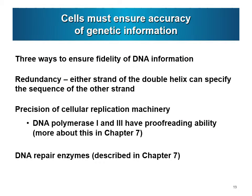There are three ways to ensure the accuracy of DNA information. First is redundancy — either strand of the double helix should specify the sequence of the other. Second is the precision of the cellular replication machinery: DNA polymerases I and III have proofreading ability, which we will discuss in more detail later. Third is DNA repair enzymes, another way of ensuring the fidelity of DNA information, also to be covered in future classes.